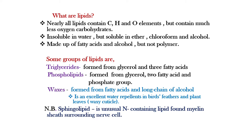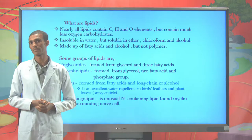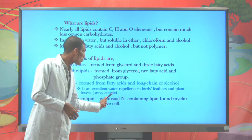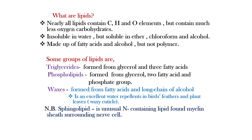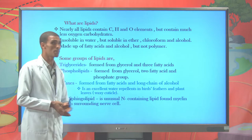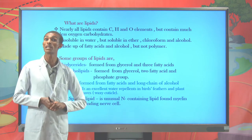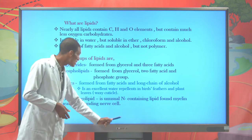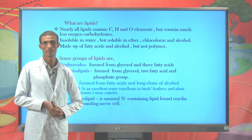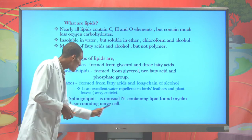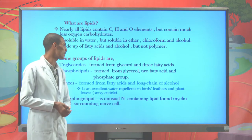Phospholipid is formed when one glycerol, two fatty acids, and a phosphate group become esterified together. Waxes are made from fatty acids and a long chain of alcohol bonded together — for example, the lipid found on the surface of bird feathers. There is also an unusual lipid called sphingolipid, which is a nitrogen-containing lipid found surrounding nervous cells. This is why we say 'nearly all' lipids contain carbon, hydrogen, and oxygen — because some, like sphingolipids, also contain nitrogen.